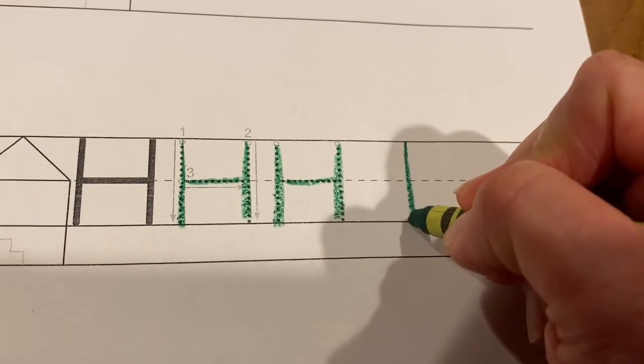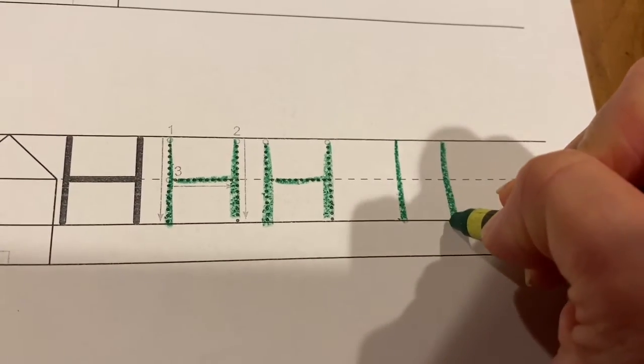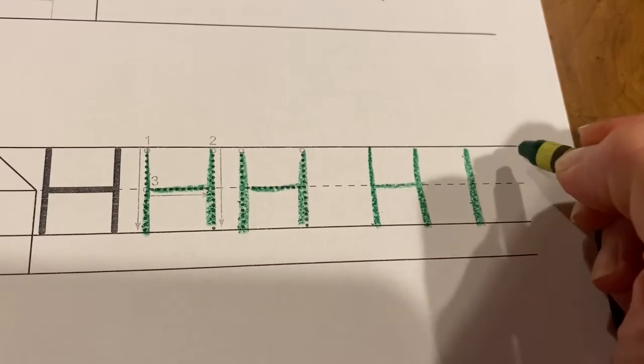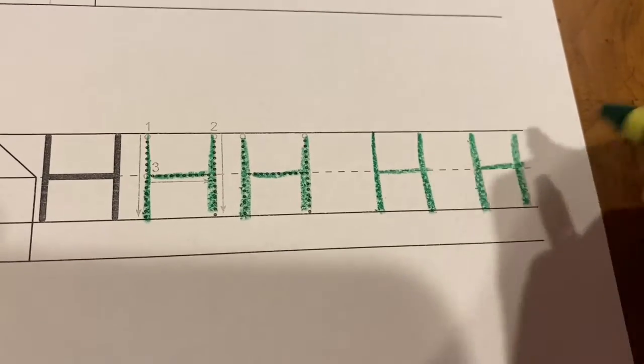So I'm going to make two. Line down, line down, line across. Again, line down, line down, line across.